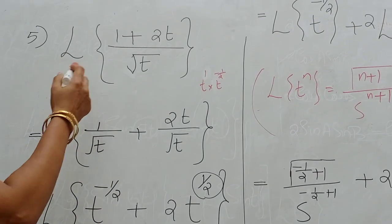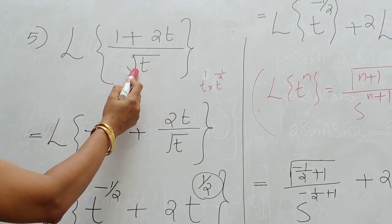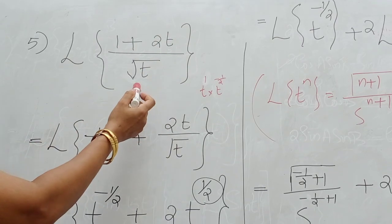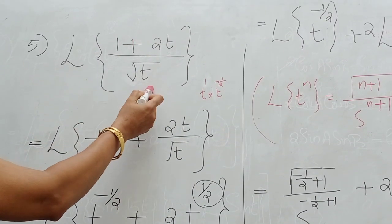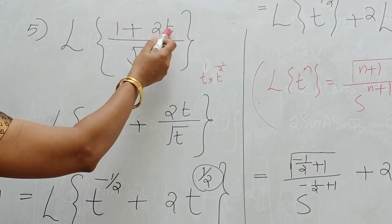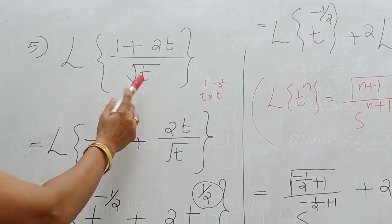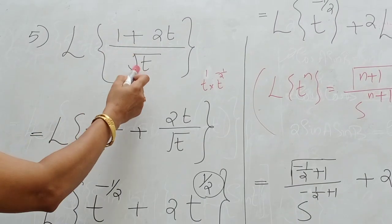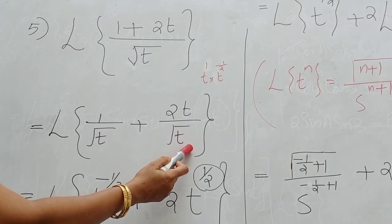Now take the next example: L of 1 plus 2T divided by root T. This function is a rational function — a function of the form F by G. We are dividing each term in the numerator by the denominator root T, so we can split this into two functions: 1 by root T plus 2T divided by root T.